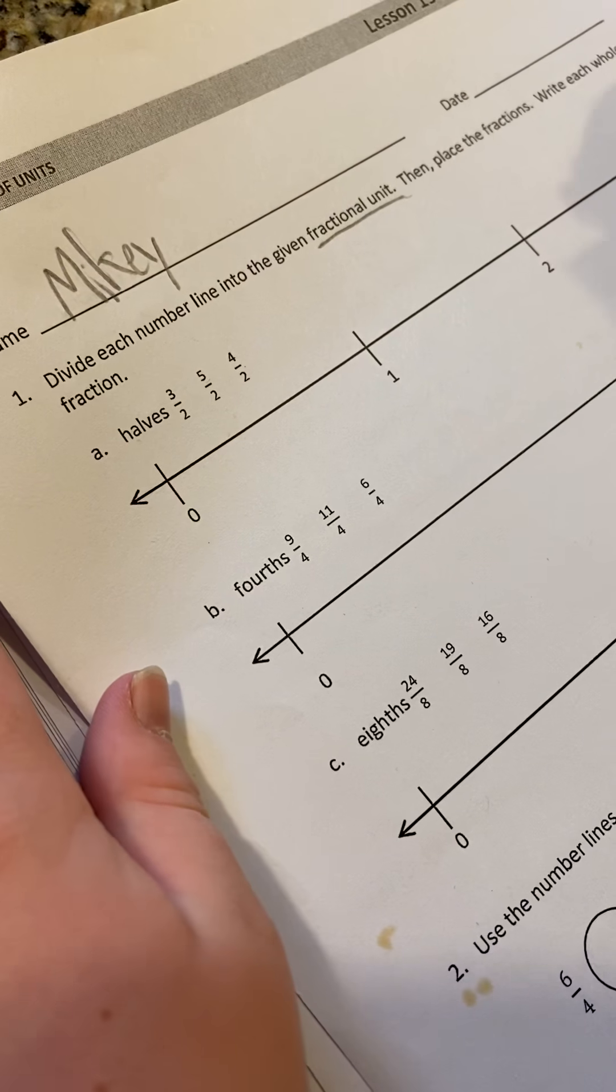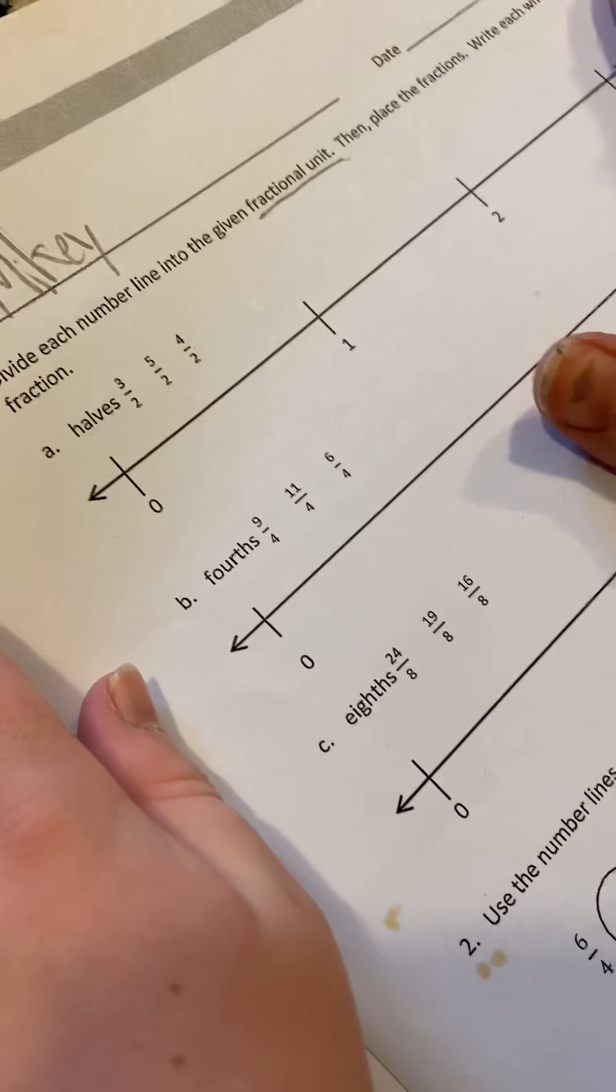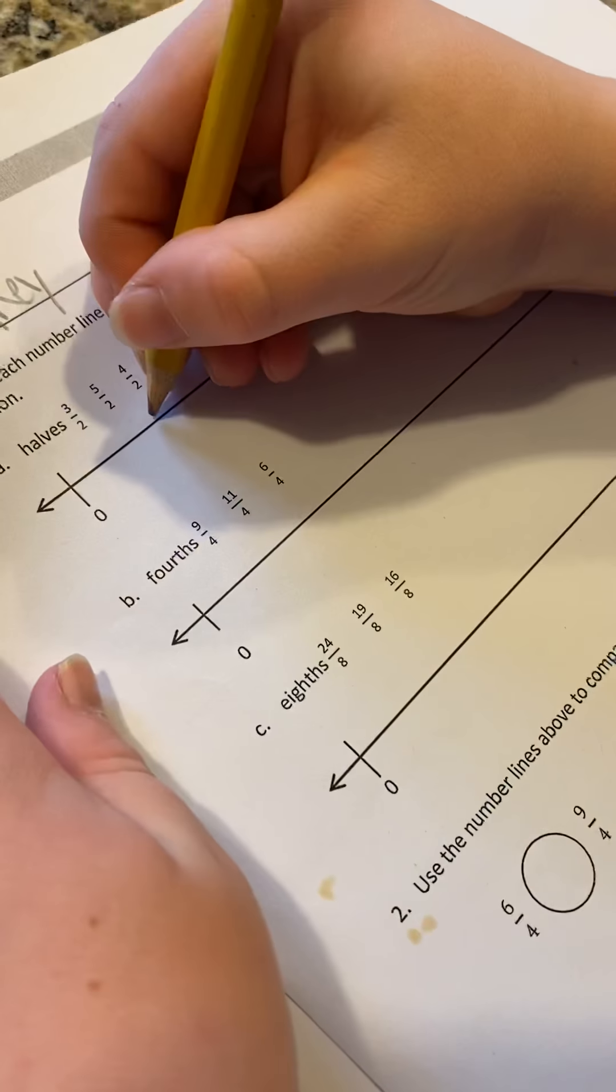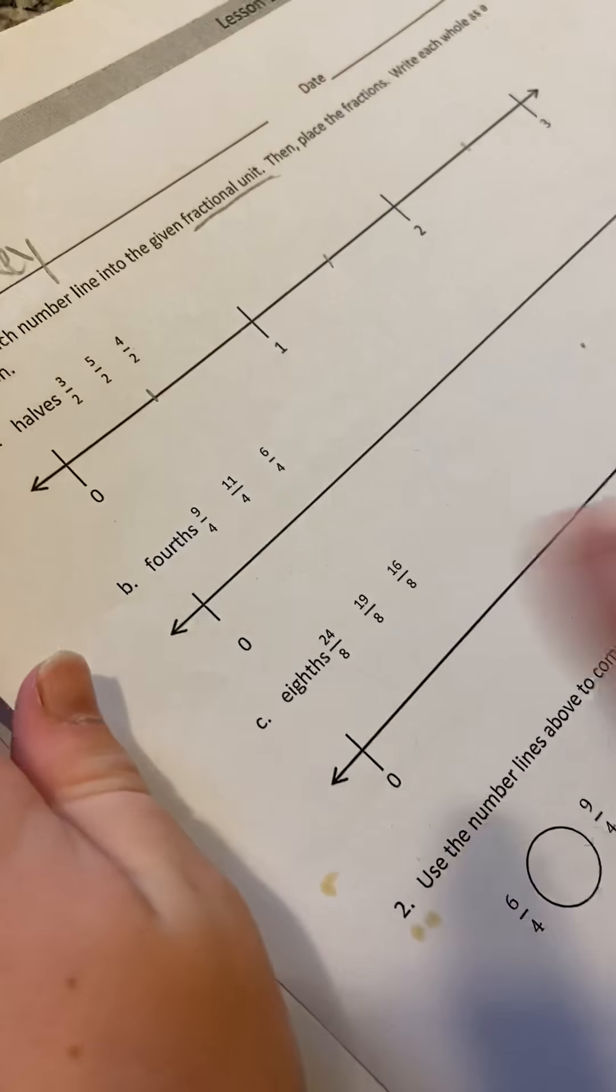Easy peasy for this one. What's the fractional unit for A? Half. So between every whole unit, one whole, two, and three, we're gonna divide it into halves. Go ahead. See those two equal parts between each whole unit? Let's count them and make sure. One, two. One, two. One, two.